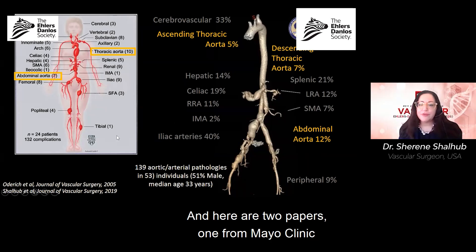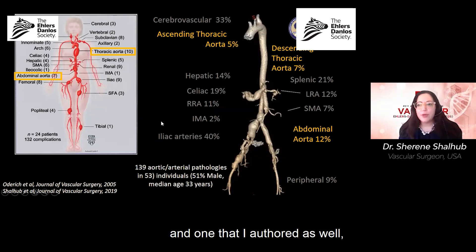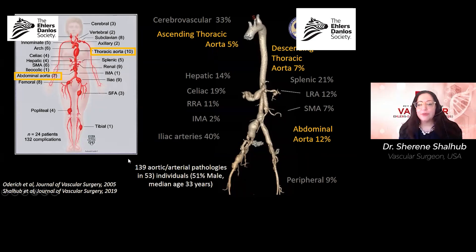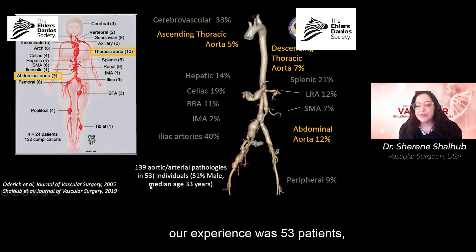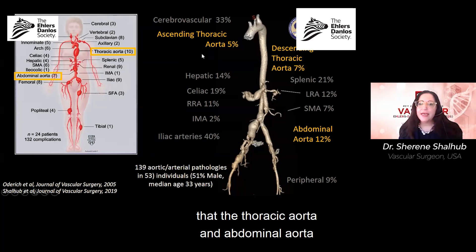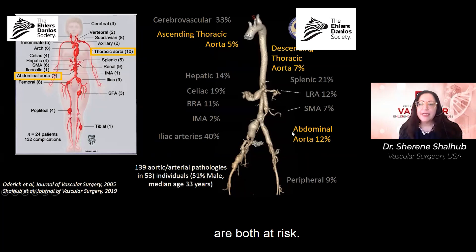Here are two papers — one from Mayo Clinic and one that I authored as well — where we looked at multi-center data. The Mayo Clinic experience was 24 patients; our experience was 53 patients. The point is that both the thoracic and abdominal aorta are at risk in vascular EDS.